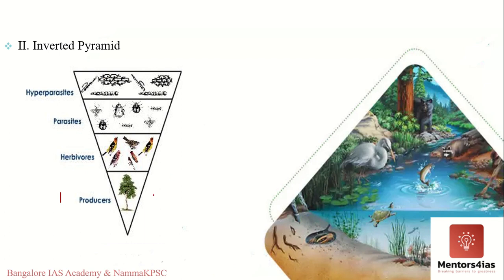A key limitation is that it is actually difficult to count all organisms in an ecosystem. For example, in an inverted pyramid it is hard to count the number of herbivores, then the number of birds, then parasites, then hyper-parasites. Therefore, the pyramid of numbers does not represent a complete picture of the structure of an ecosystem and is never the first choice for studying organism interactions.